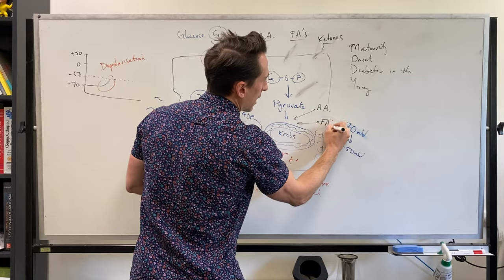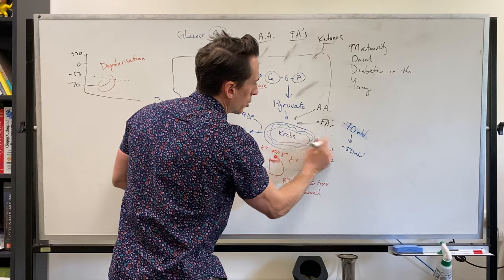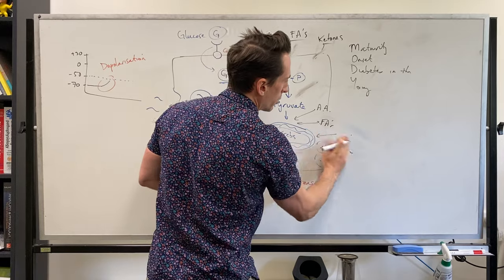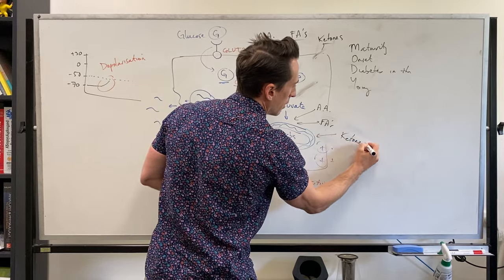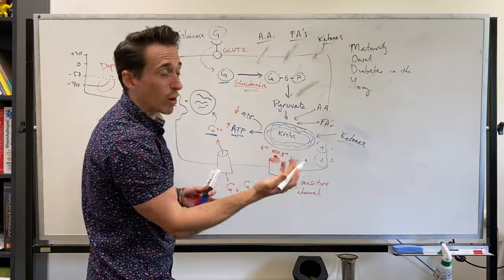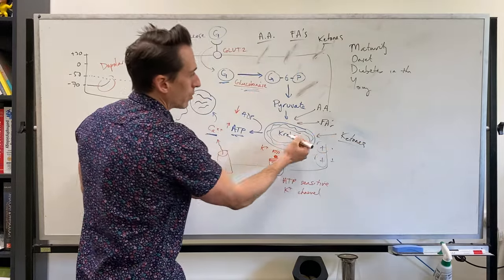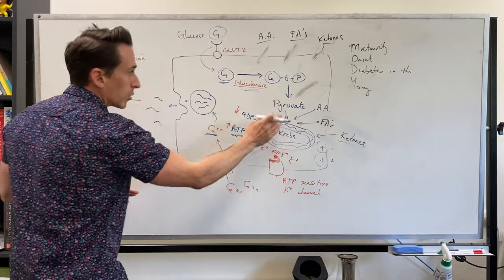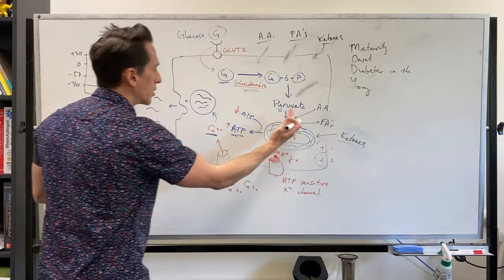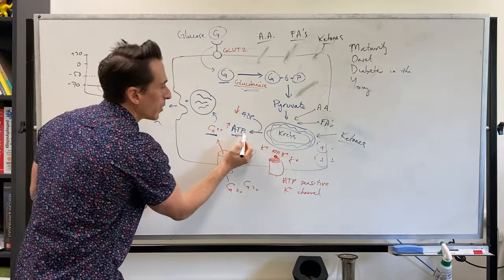So that means, and ketones basically jump in too around about this phase because ketones are pretty much just a bunch of acetyl-CoA snapped together. Acetyl-CoA is a substrate in the Krebs cycle. So they all jump in, which means the way that amino acids, fatty acids and ketones promote insulin release is simply by producing ATP.